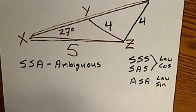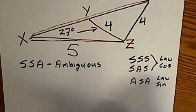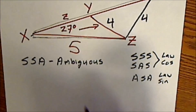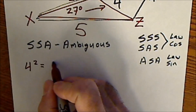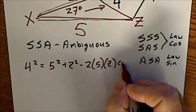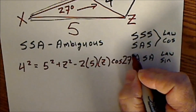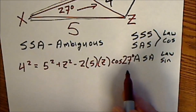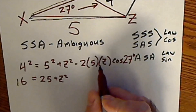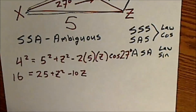Back to the side-side-angle triangle. I'm going to use the law of cosines. This is the side opposite the 27 degrees. If this is angle Z, this is lowercase z side. So I take the side opposite the 27 degrees and say 4 squared equals 5 squared plus Z squared minus 2 times 5 times Z times cosine of the angle opposite the 4 — so cosine of 27 degrees. I have one equation with one variable, but the variable appears in two places, so I need to set it up like a quadratic.